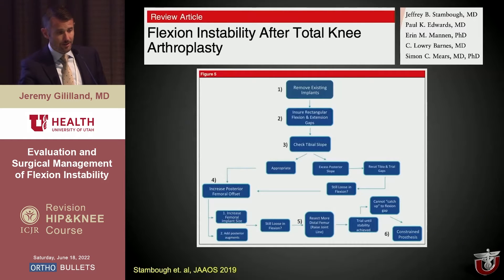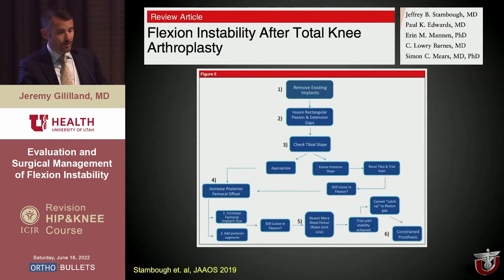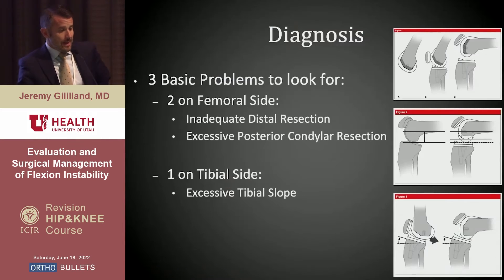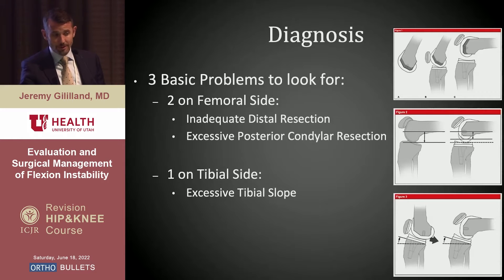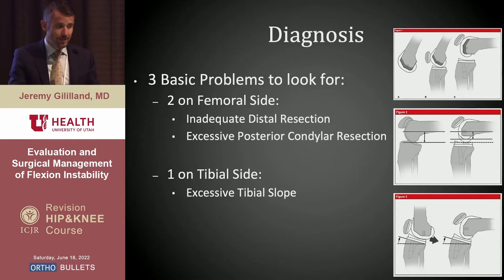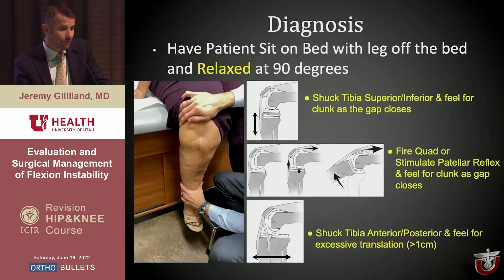This paper from the Arkansas group is also quite helpful — it's a review article in JAAOS that follows a flow diagram covering all the topics Matt's paper discussed, with nice diagrams showing why these problems exist. Basically, there are two things on the femoral side that can be wrong: inadequate distal resection and excessive posterior condylar resection. On the tibial side: excessive tibial slope.